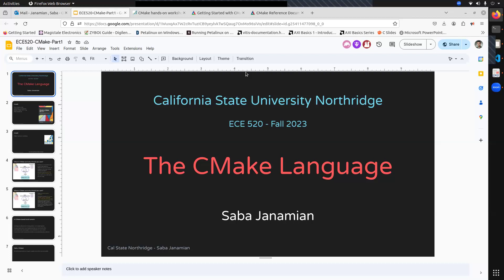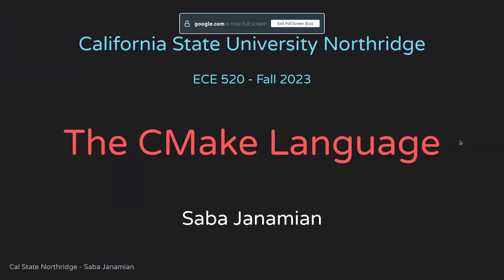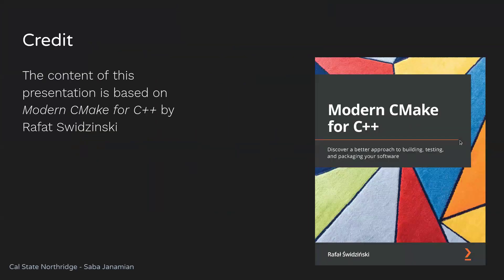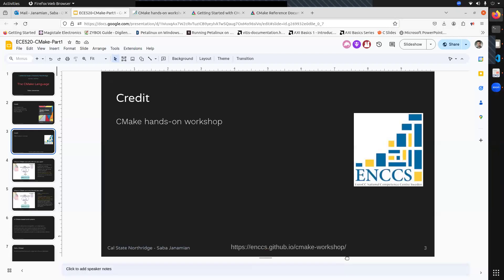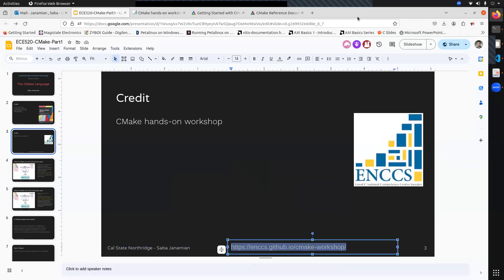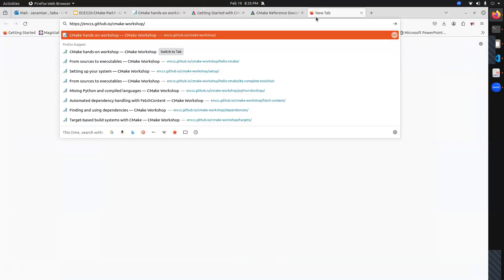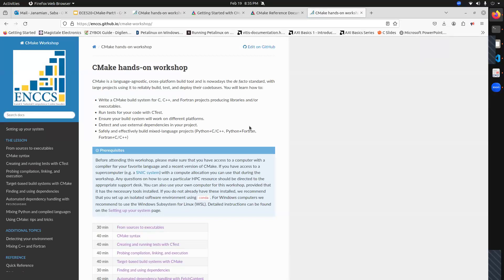That's our plan for Saturday. Now let's get into today's topic, which is the CMake language. As a credit, the information in these slides comes from two resources: the first is Modern CMake for C++, and the other is from a really good workshop you can find online. They have a set of good instructions and exercises that you can look into or finish yourself.